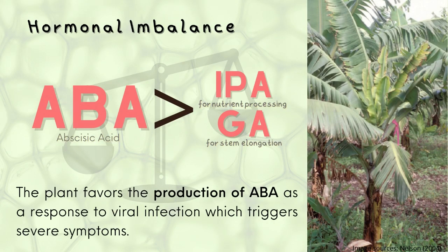Hormonal imbalance. As discussed, emergence of BBTD symptoms are signs of hormonal imbalance caused by BBTV. This is because the plant favors the production of abscisic acid, or ABA, as its response to the infection, instead of the production of essential hormones needed for plant development.